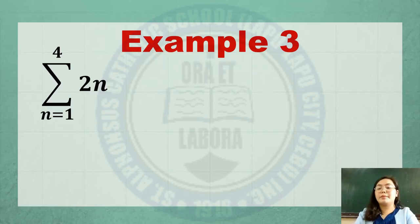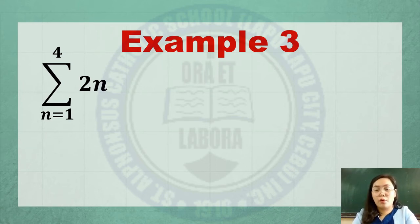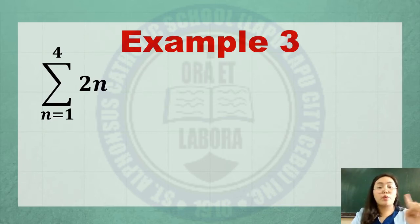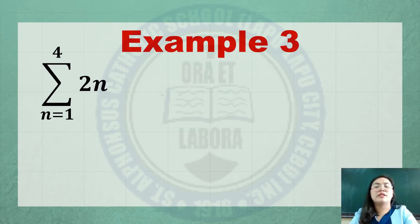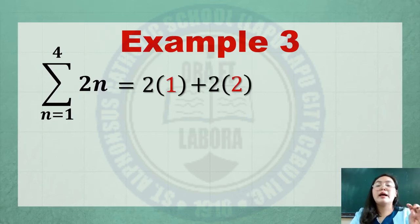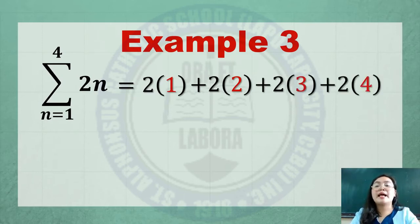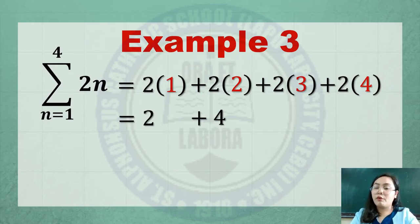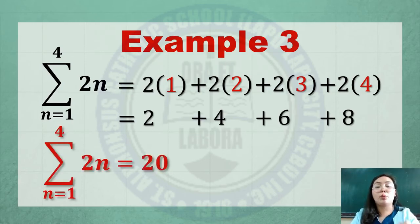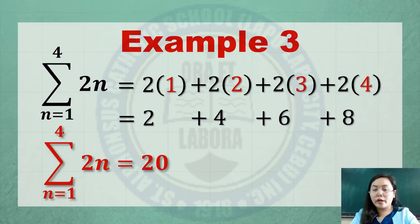Example number 3: summation of 2n from n equals 1 to n equals 4. Simply replace n consecutively with the integers from the value of the lower index, which is 1, to the value of the upper index, which is 4. So you have 2 times n with n replaced by 1, plus 2 times n with n replaced by 2, plus 2 times n with n replaced by 3, plus 2 times n with n replaced by 4. Simplifying: 2 times 1 is 2, 2 times 2 is 4, 2 times 3 is 6, 2 times 4 is 8. Getting the sum, the answer is 20. So the summation of 2n from n equals 1 to n equals 4 is equal to 20.